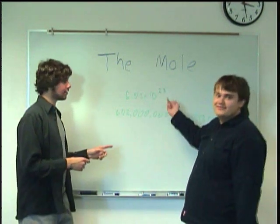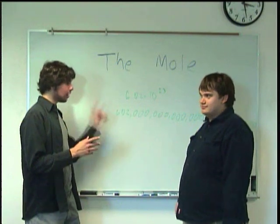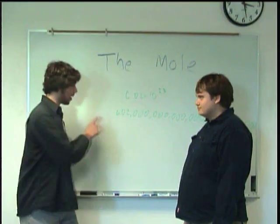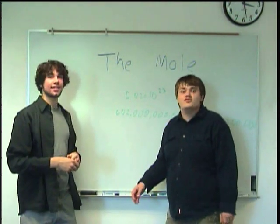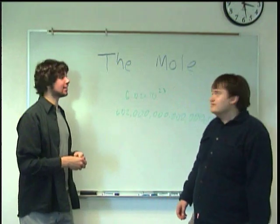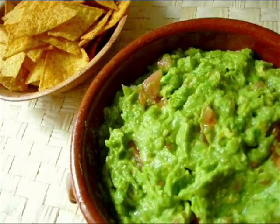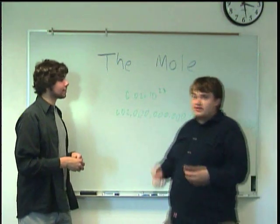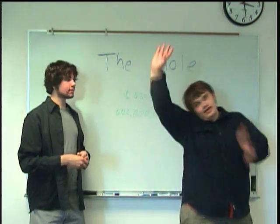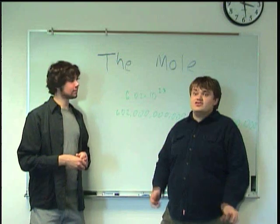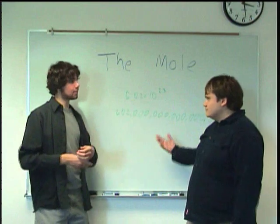This is why we use scientific notation. If I wanted to have one mole of avocados, it would be that many avocados — and it would most likely bury the entire surface of the earth several times over. That is a really, really big number. But with atoms or molecules, atoms are really, really, really small, so it makes sense that we can have such a big number.